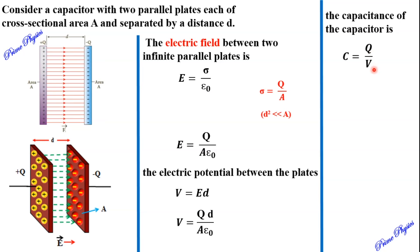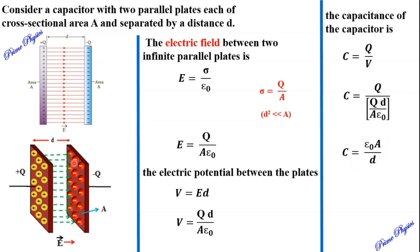Now substituting into the general formula for capacitance, C is equal to Q by V. We substitute the value of V: Q cancels with Q, giving C is equal to A times epsilon naught divided by D. This is the formula for the capacitance of a parallel plate capacitor. In this equation, one factor is directly proportional and the denominator factor is inversely proportional.